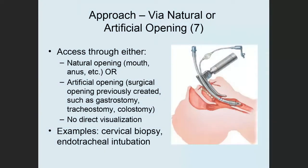Let's start with the natural artificial opening — that's character value 7. This includes those natural openings we talked about, but also artificial openings that are not ones we were born with but were created surgically — for example, gastrostomy, tracheostomy, or colostomy. In this value, there's no direct visualization of the area where surgery is performed. Examples include a cervical biopsy, which is transvaginal, and endotracheal intubation, which is through the mouth.